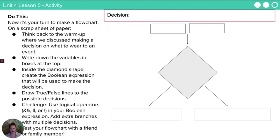So to finish up our flowchart activity, this is your turn. What I would like for you to do on a scrap sheet of paper is think back to the warmup, which you did this morning or earlier today, where you discussed making a decision on what to wear to an event. If you did not do the warmup, go ahead and write down a question about something that you would need a decision to be made. And then I want you to write down the variables in the boxes at the top. So you're going to make something that looks like the flowchart on this screen. Inside the diamond shape, create the Boolean expression that will be used to make the decision. Draw true and false lines to possible decisions and what those decisions would be. A challenge might be to use logical operators, an and, an or, or a not in your Boolean expression, depending on what your statement is or the decision you are trying to make. So go ahead and draw this out. Take a minute. Pause this video. Test your flowchart with a friend or a family member. Give them some values. See how they do.